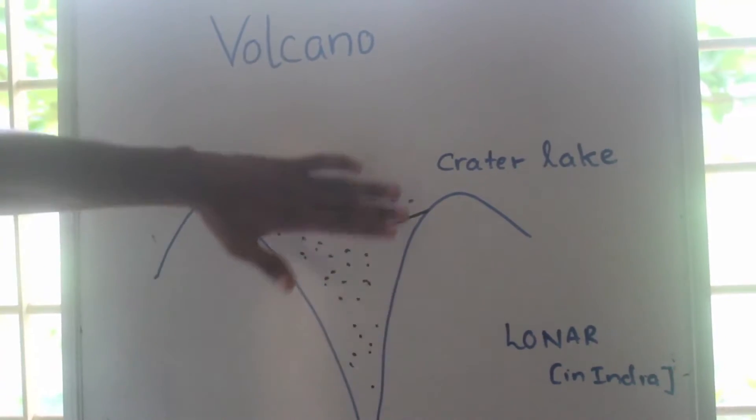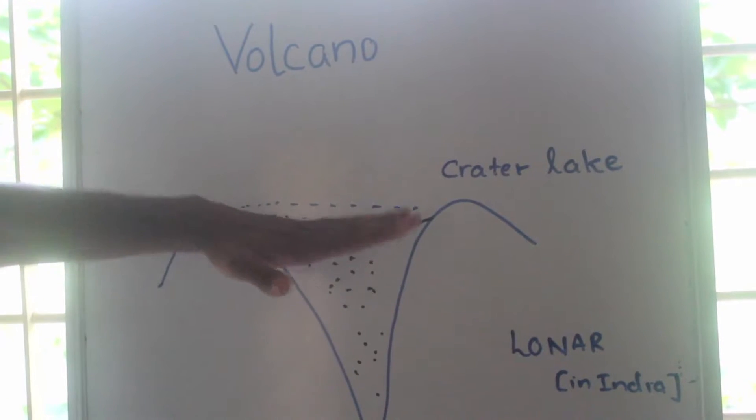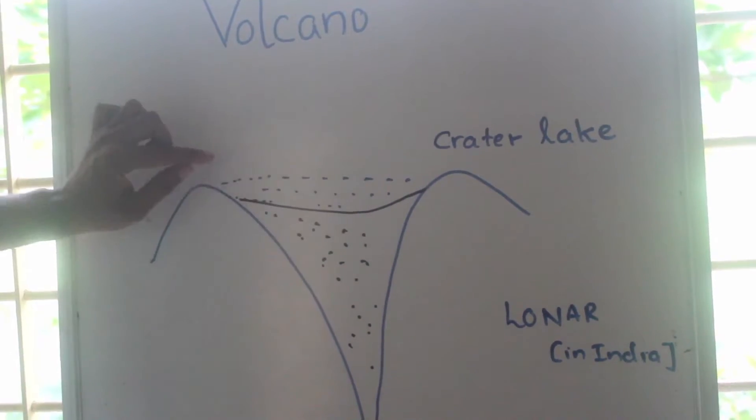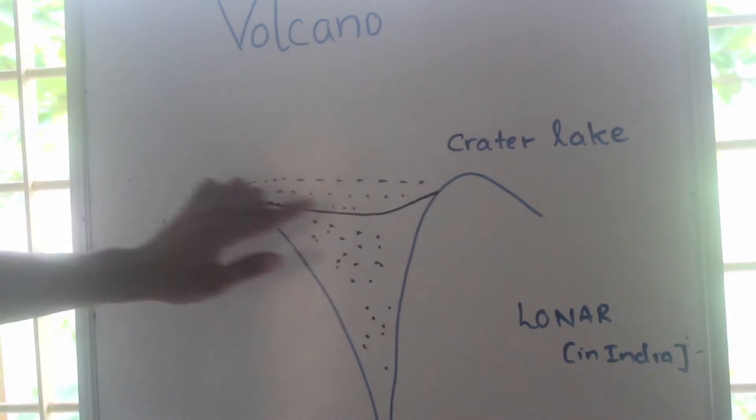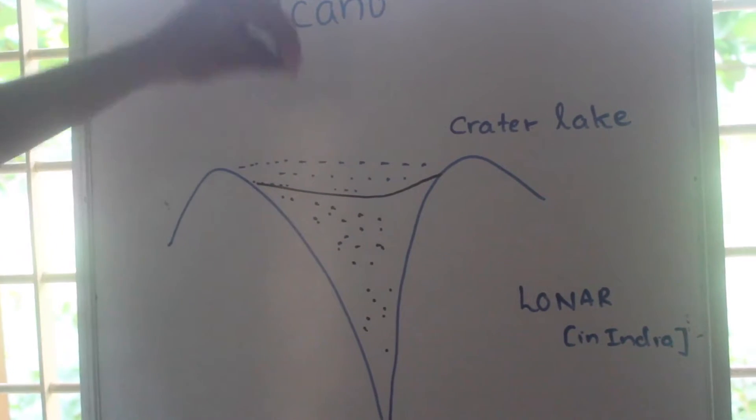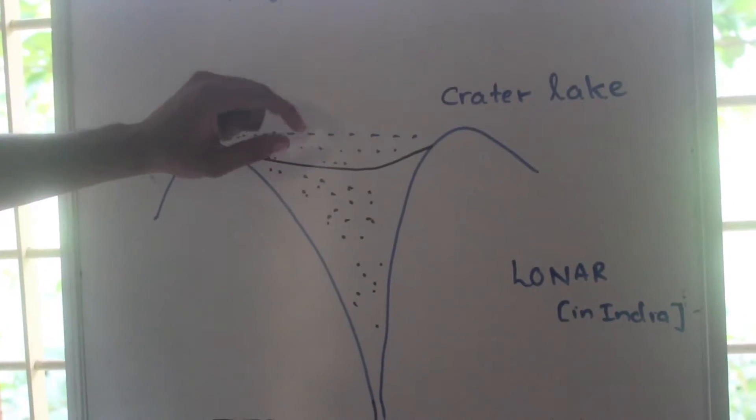After the explosion, a dip will be formed. If water fills that particular mouth of the volcano, this is called a crater. If water is filled in that mouth, we get a lake.